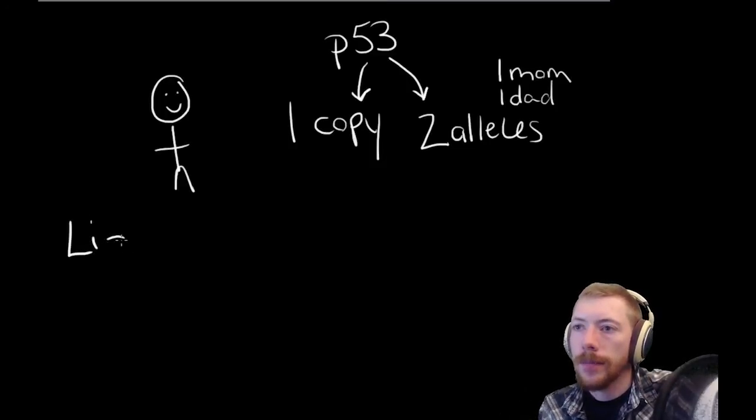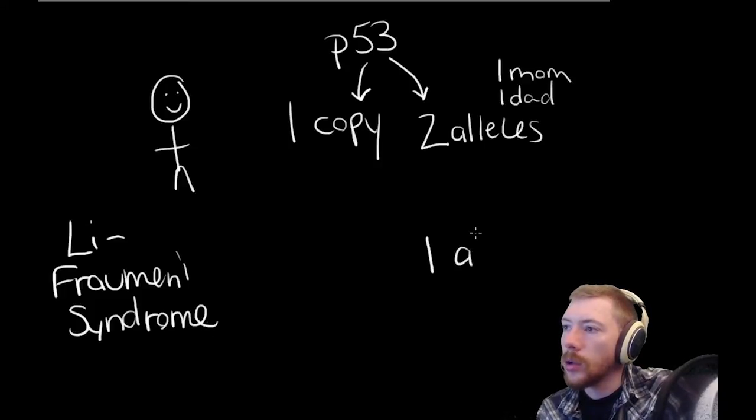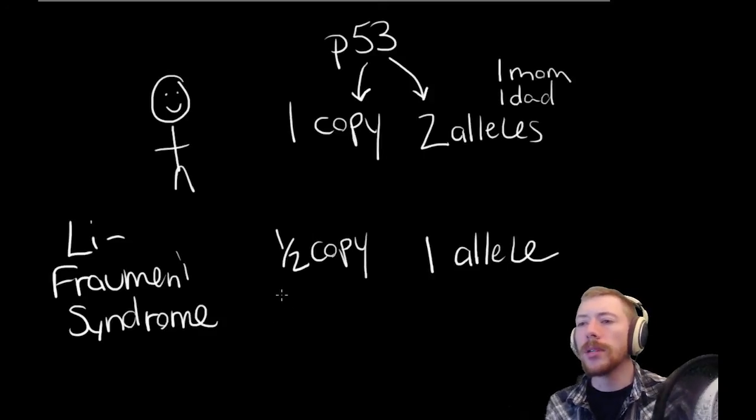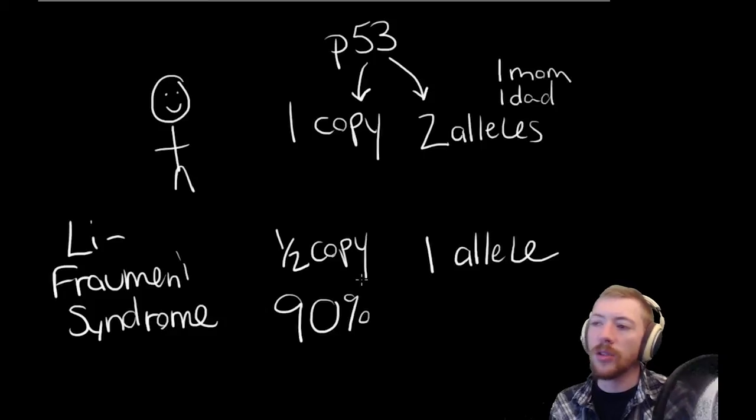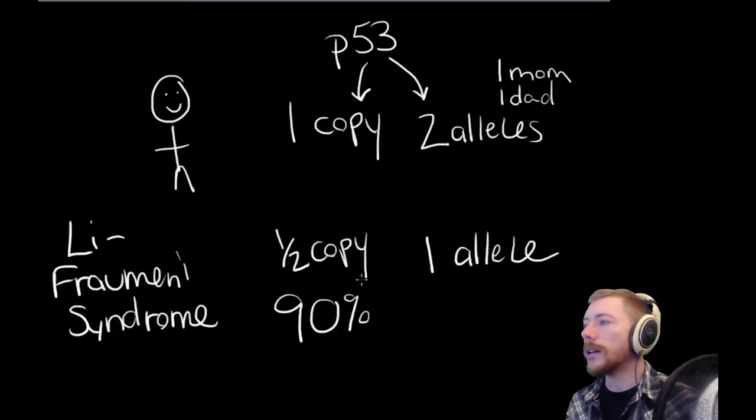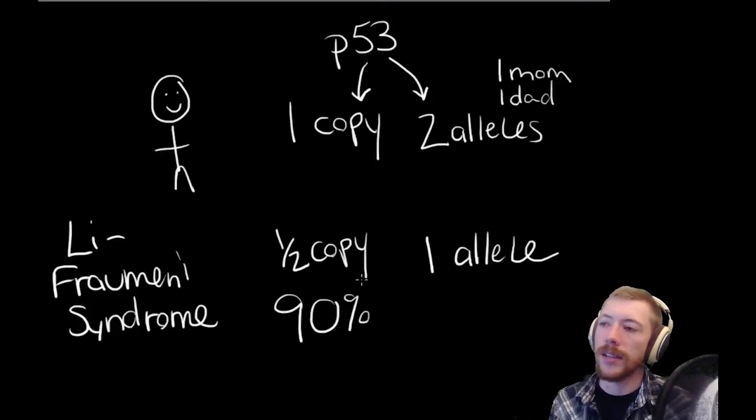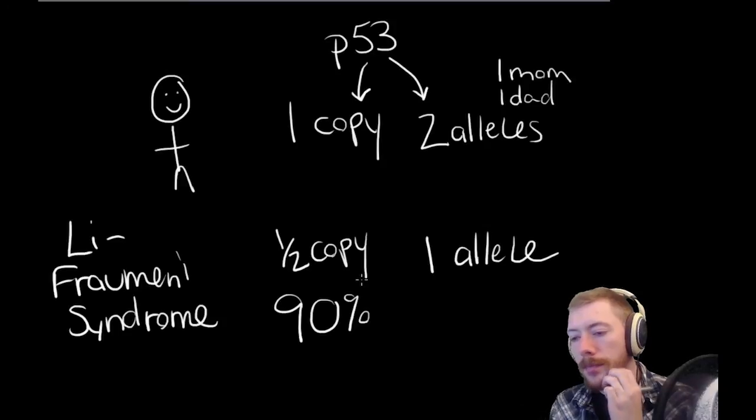Some people, however, are born with a disease called Lee-Fraumeni Syndrome. And people born with Lee-Fraumeni only have one functional allele of the P53 gene. So in a sense, they only have half a copy of this gene. And what ends up happening is that people with Lee-Fraumeni Syndrome have a 90% lifetime risk for cancer. And in women, it's almost a 100% chance that they will develop cancer at some point in their life. Multiple primary tumors are very common. And it is also, unfortunately, very common for people with LFS to develop cancer in their childhood. And it's a very tragic disease.